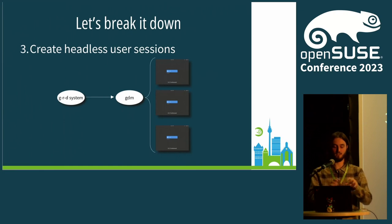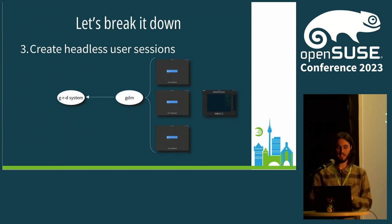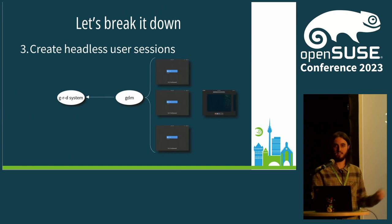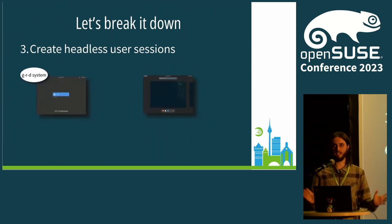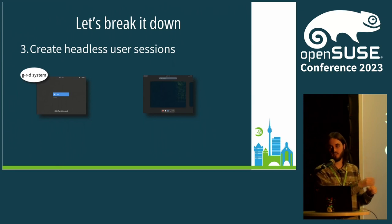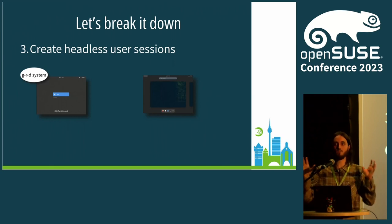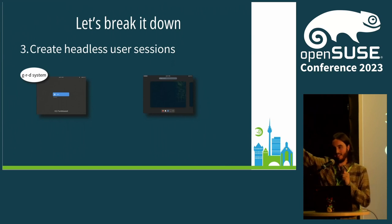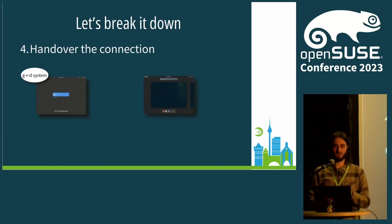The next step is that the user authenticates successfully, and a headless user session is going to be created. GDM will be in charge of starting this headless user session, and GDM will tell the system daemon that there's been a successful authentication and now we have a new user session. Now we have two different sessions — the system daemon was displaying the greeter session, and now we have a different session running a different Mutter instance, running as a different user. So, how can we make the system daemon display this new session? This is the most critical part — the part where I've worked the most.